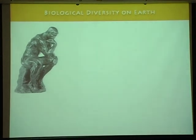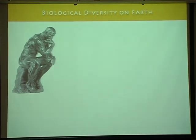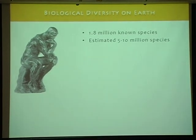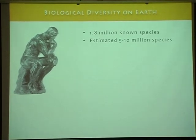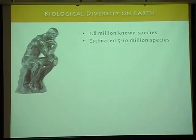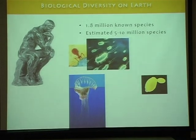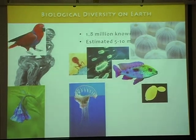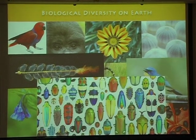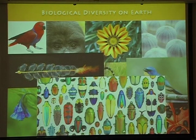This is Rodin's famous sculpture, The Thinker, and some people wonder what he's thinking. I like to fancy him thinking about big questions in biology. We know there are approximately 1.8 million known species, and the estimate of the actual total number of species is anywhere between 5 to 10 million. These range from very simple organisms like viruses to highly complex organisms like siphonophores, insects, mammals, and lots of beetles. Insects seem to have just gone crazy in terms of both speciation and morphological evolution.